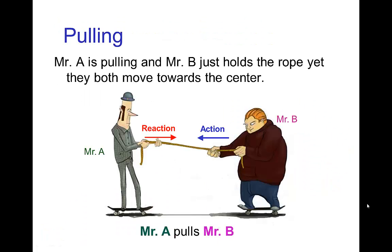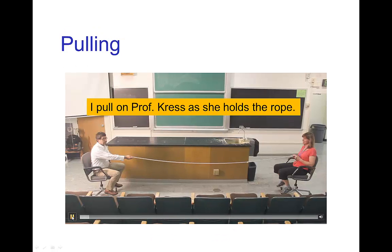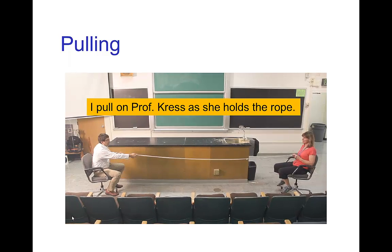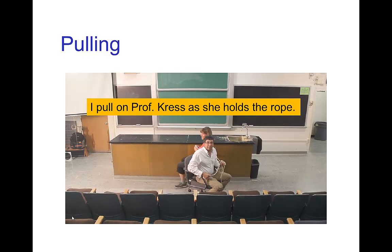Let's look at a basic example where two characters are interacting, with one character pulling the other character towards him. So let's say Mr. A is pulling Mr. B towards him, and Mr. B is just holding on to the rope. Here's a little video demonstrating that — I am pulling Dr. Kress and she just holds the rope, and you see that we come together roughly in the middle.